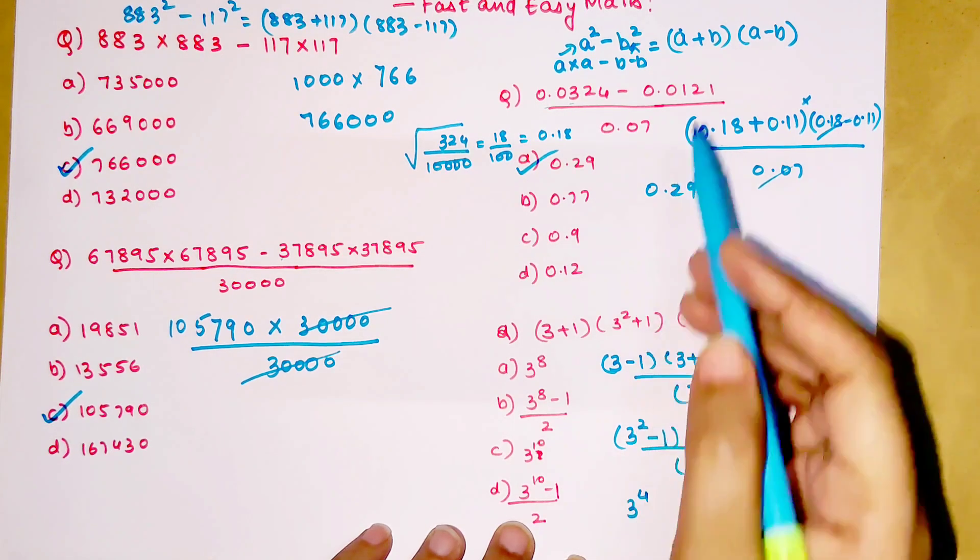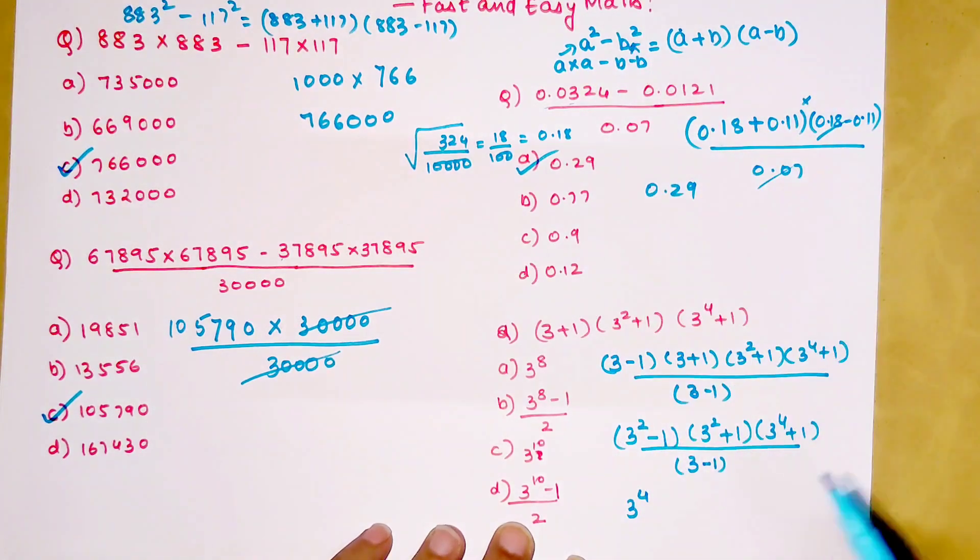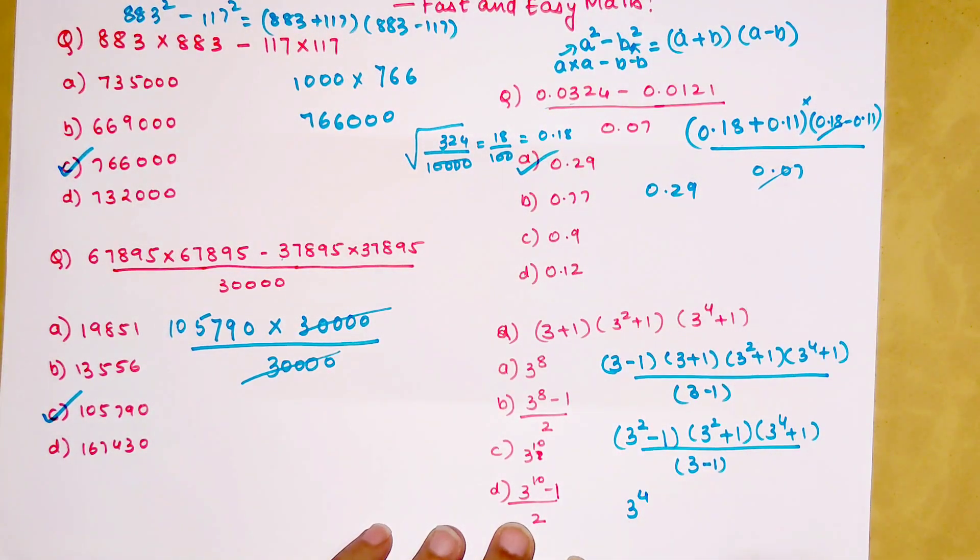The index is doubling here. The index was 1, then it changes to 2, because (a + b)(a - b) gets you a² - b². Similarly, 3² × 3² will get you 3⁴ - 1⁴, which can be written as just 1.